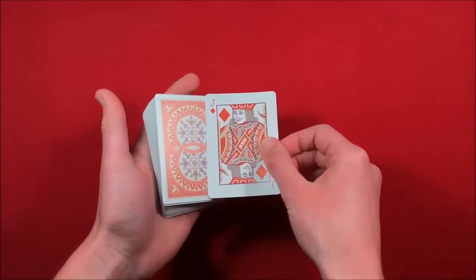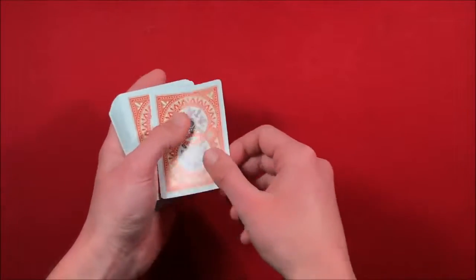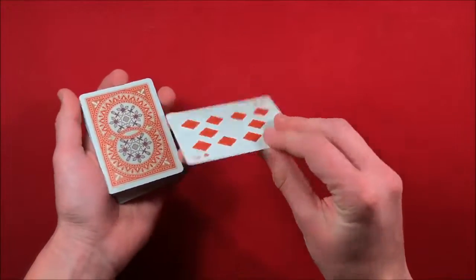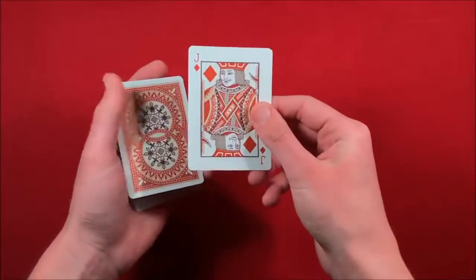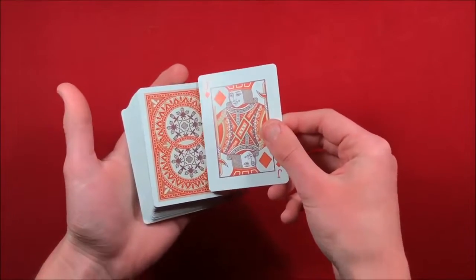And now once you do the double lift, you can take it and take their card - in this case the jack of diamonds. When you do your double lift, you're putting that ten or that indifferent card into the middle, and their card is still going to be on top. So at this point...